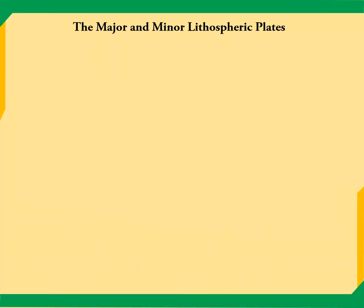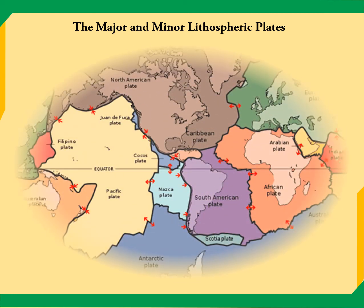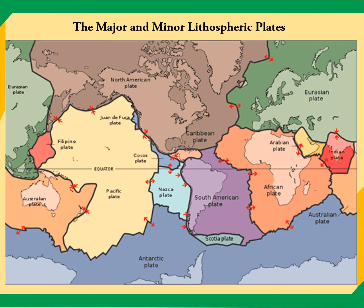Since we're talking about plates, this is how the Earth is divided according to tectonic plates. We have seven major plates and eight minor plates. The seven major plates are: the Pacific Plate, the North American Plate, the South American Plate, the African Plate, the Australian Plate, the Eurasian Plate, and the Antarctic Plate. The minor plates include the Juan de Fuca, Nazca, Scotia, Caribbean, Indian, Philippine, and Cocos plates. The Philippines is closest to the Philippine Plate.